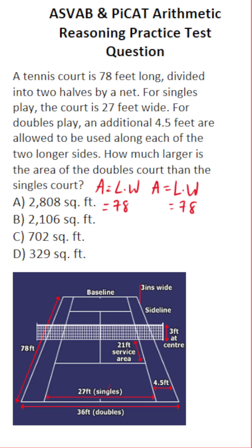What is the width of the singles court? Well, according to the problem, it's 27 feet. What is the width of the doubles court? Well, according to the problem, you get an extra four and a half feet here and an extra four and a half feet here. Four and a half and four and a half is nine. Nine plus 27 gets you to 36 as your width for that.